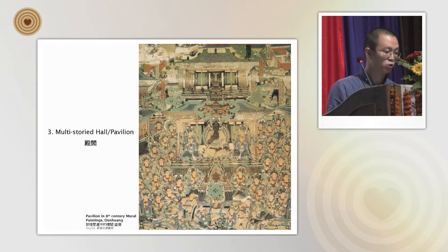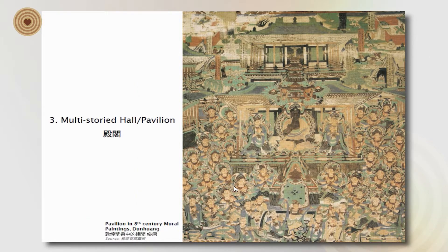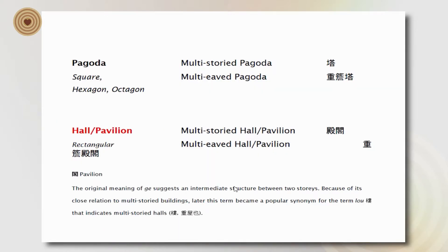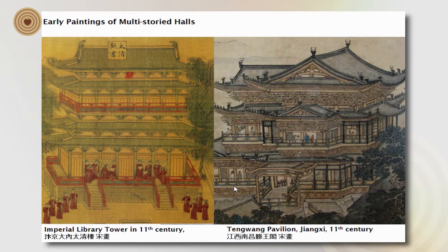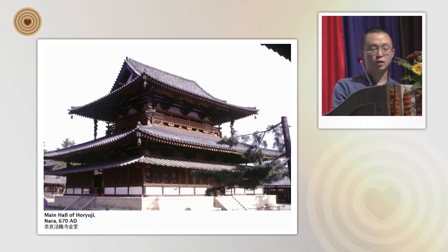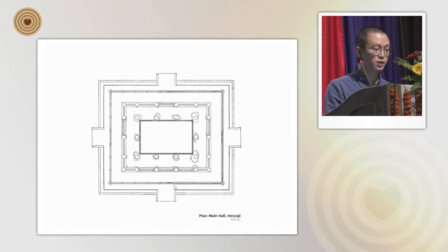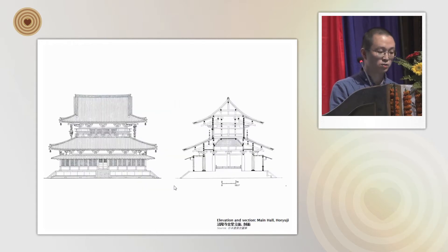The next type is called the multi-storied hall or pavilion. This type has a different origination from the pagoda — it developed directly from the hall, which is a secular building, as we can see from 8th century examples. Pavilions were used not only in religious architecture but also in imperial palaces, as seen in 11th century paintings with many multi-story hall pavilions in imperial architecture. The earliest example is the main hall of Horyuji from the 7th century: a rectangular layout where, although only one story is used, two tiers of columns support the roof to create a two-storied appearance.